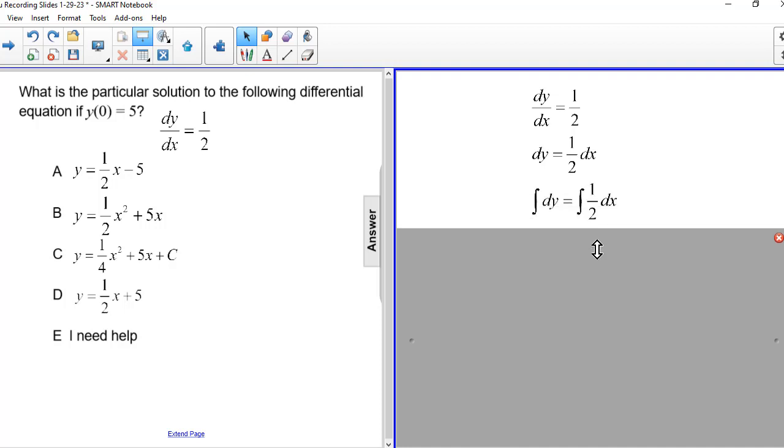I'm going to find the antiderivative by taking the integral of both sides. So I have the integral of dy is equal to the integral of 1 half dx.